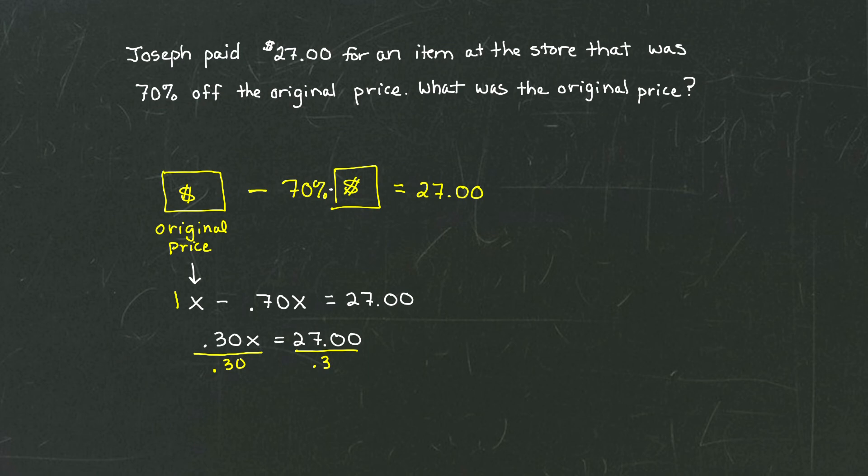On the left side, that leaves us with X, which is our original price. And on the right side, we have 27 divided by 0.30. Whip out your calculator, and you're going to get that X is 90. Or in other words, the original item or the original price of that item before the sale is just $90.